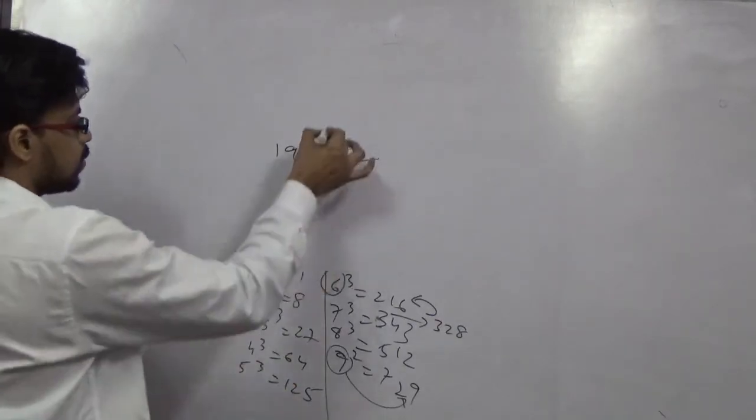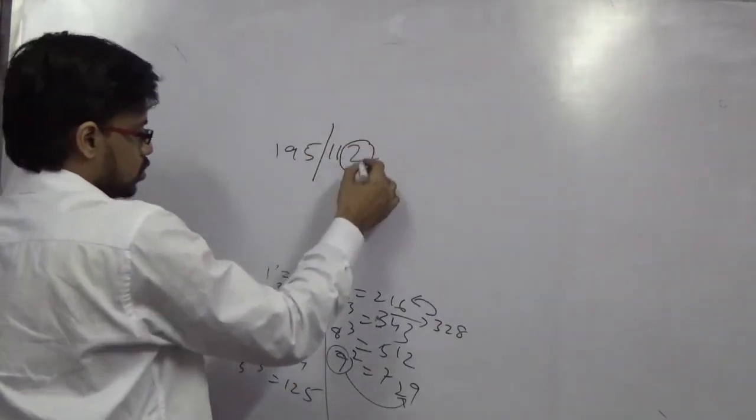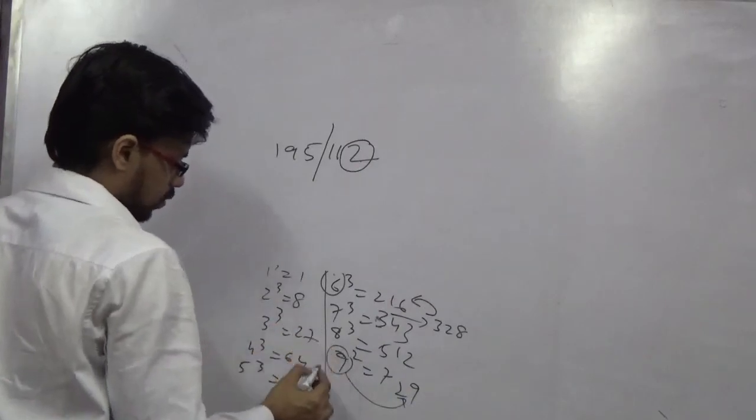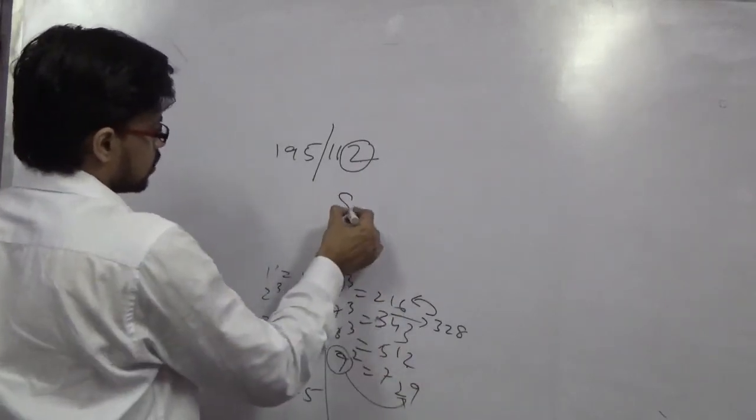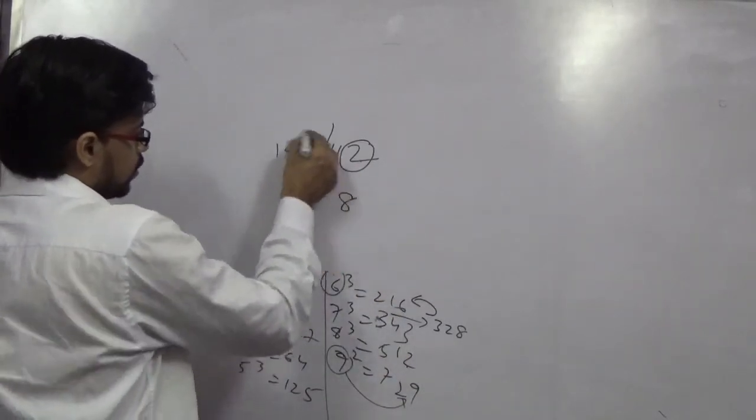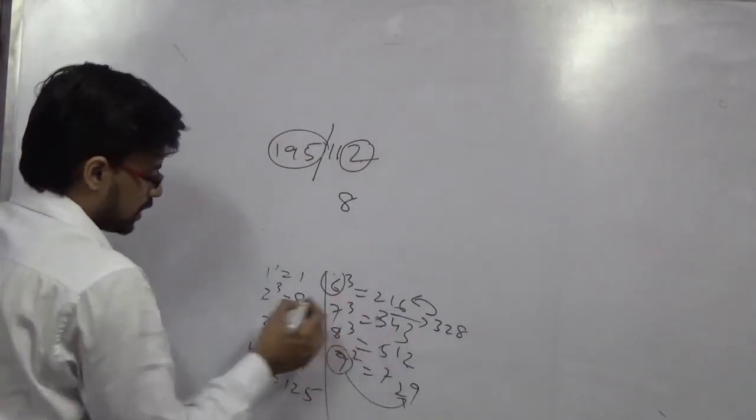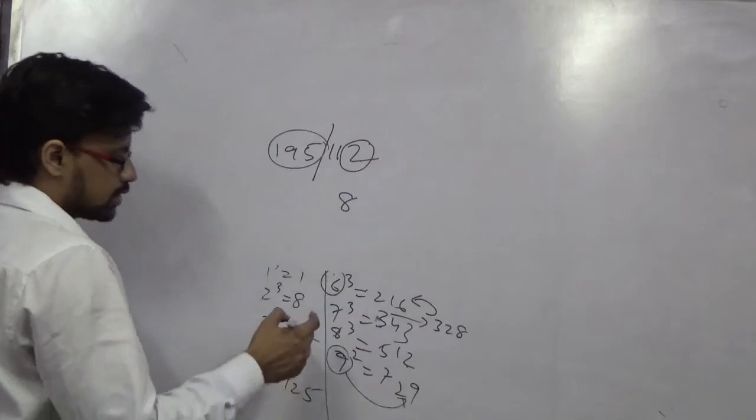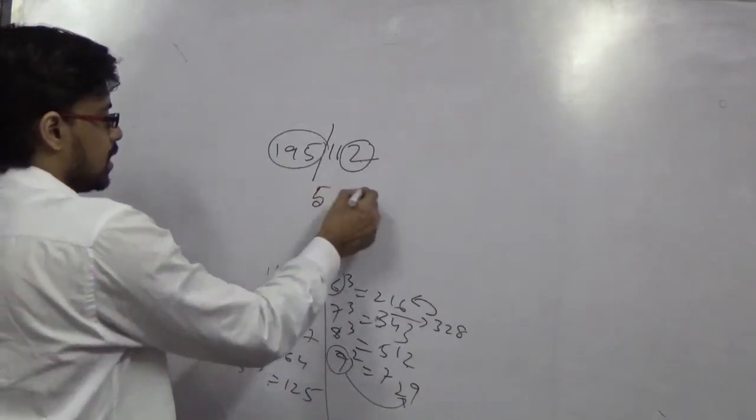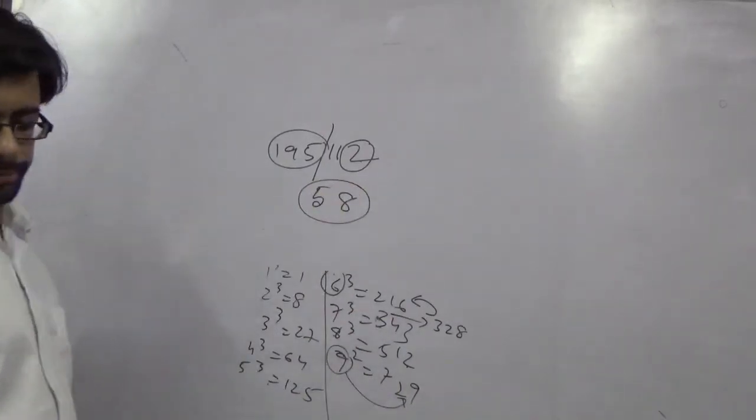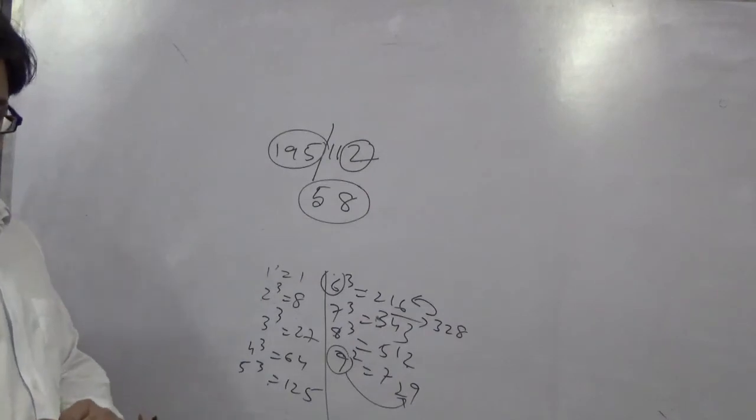195112. So again split it into two parts. This 2 means, according to our formula, it is 8, so this is 8. And the first number is 195 which lies between 5 and 6. So the answer is 58. That is the basic logic.